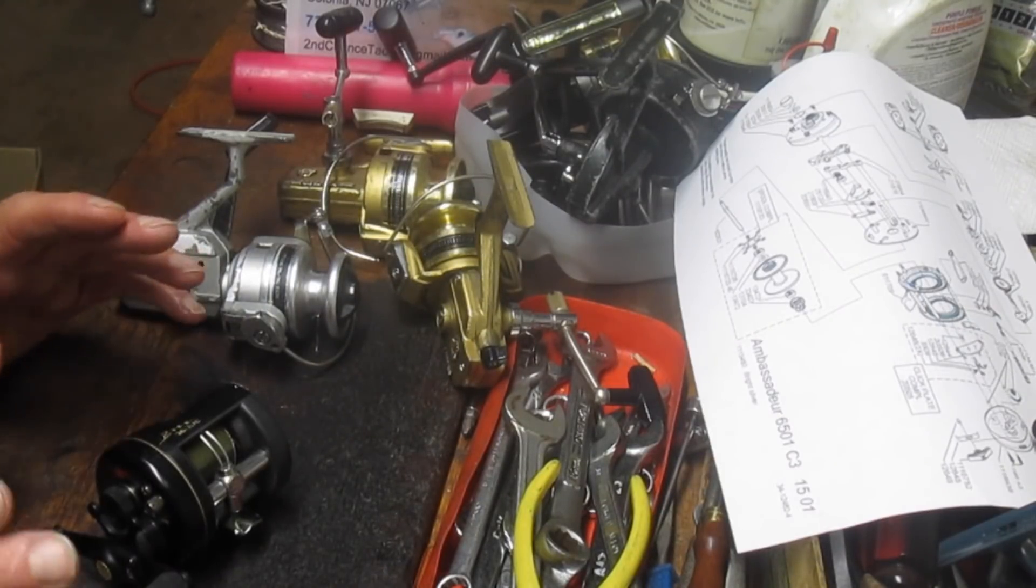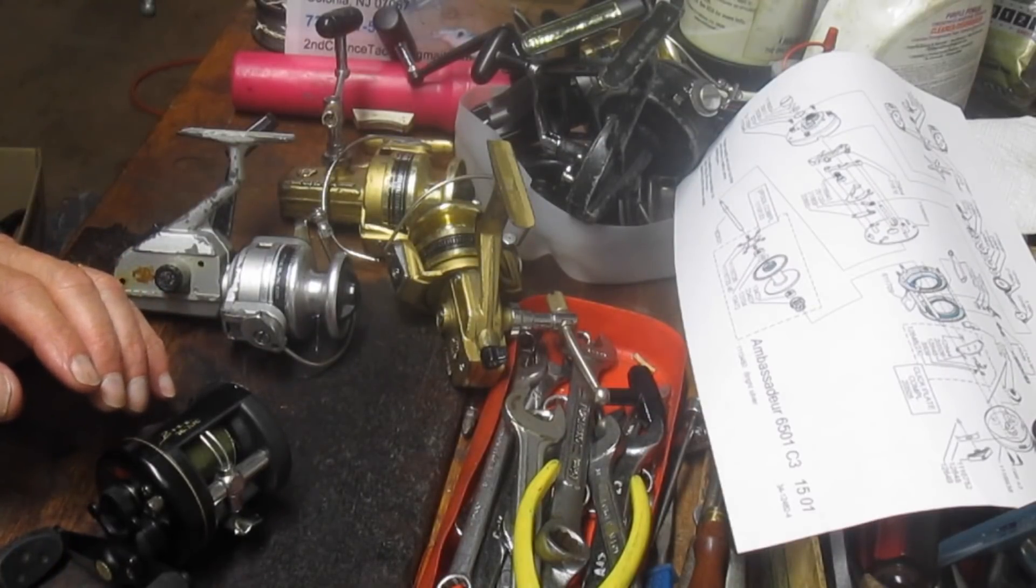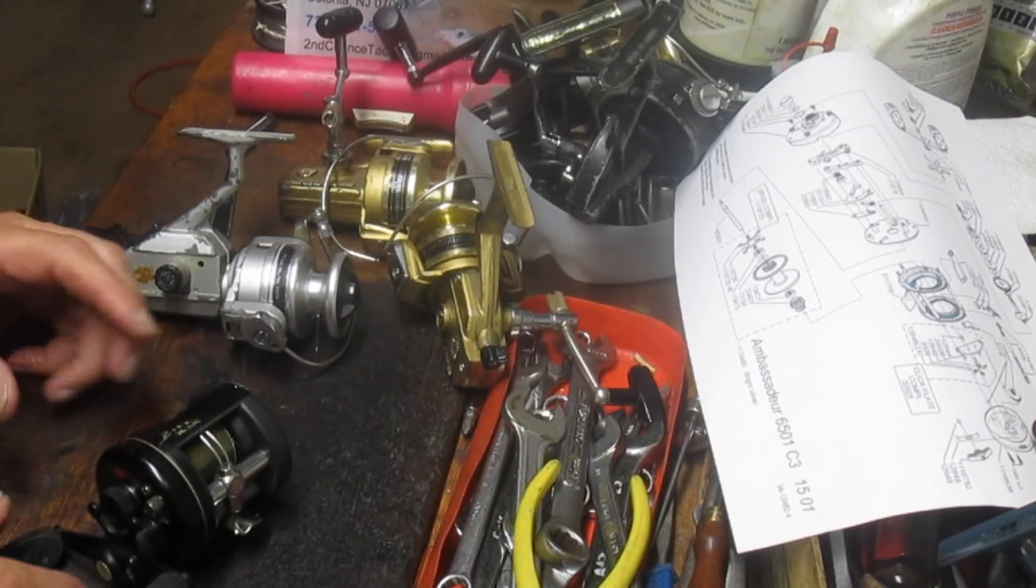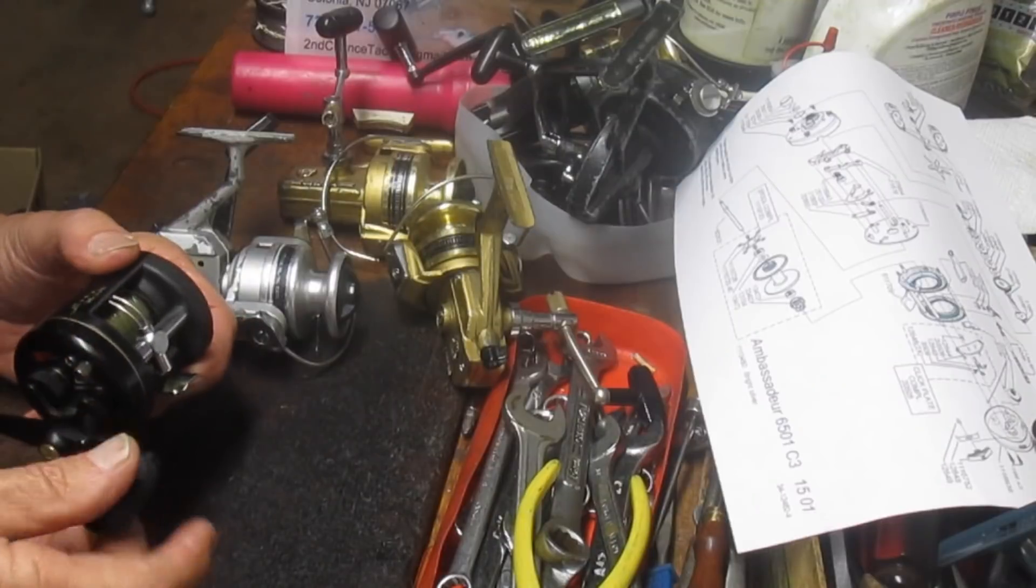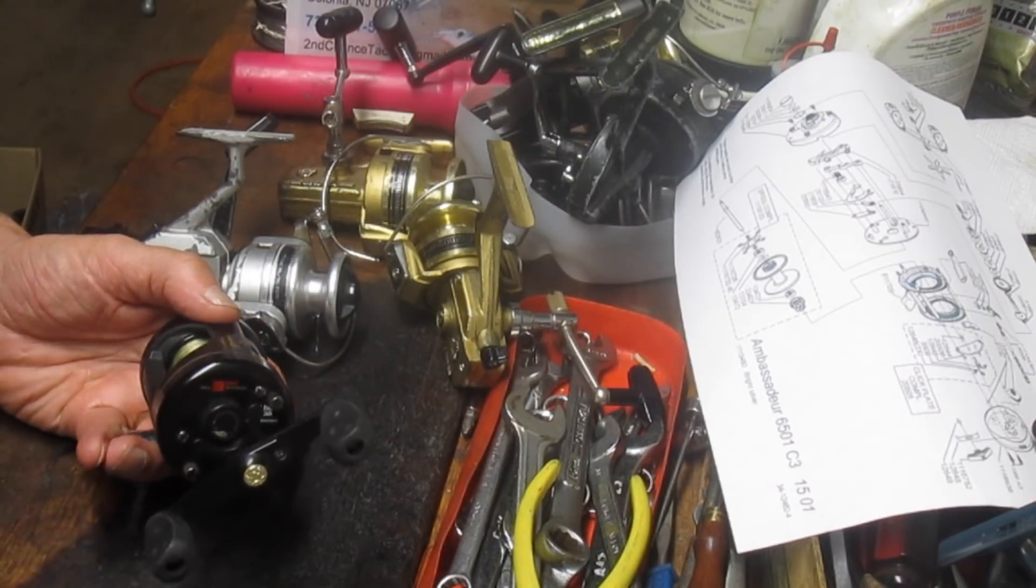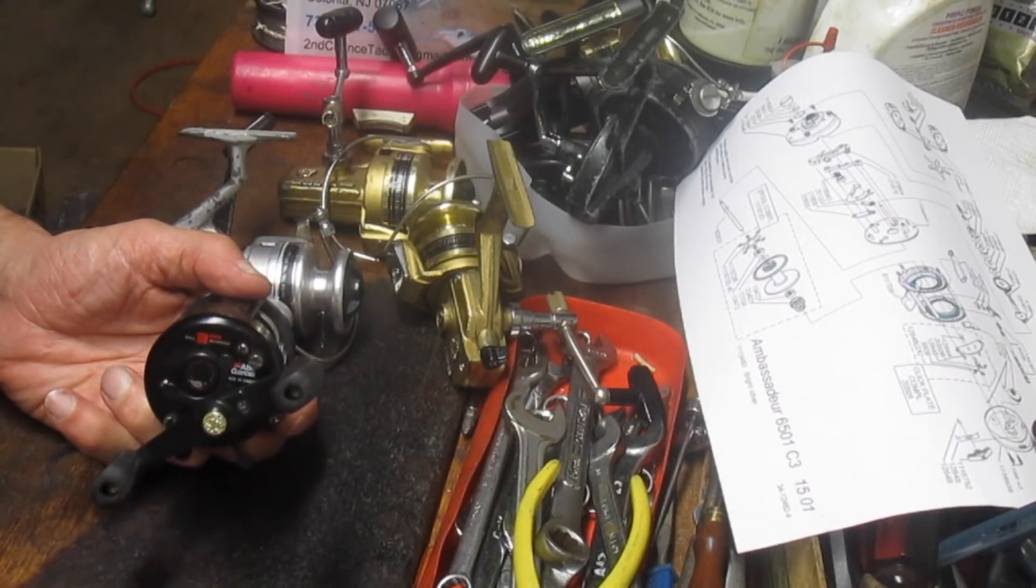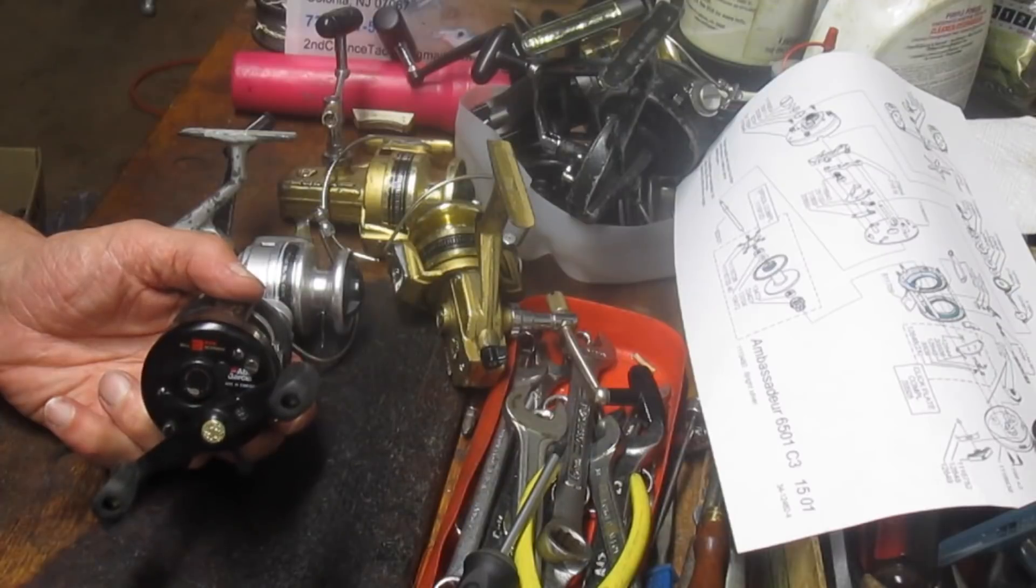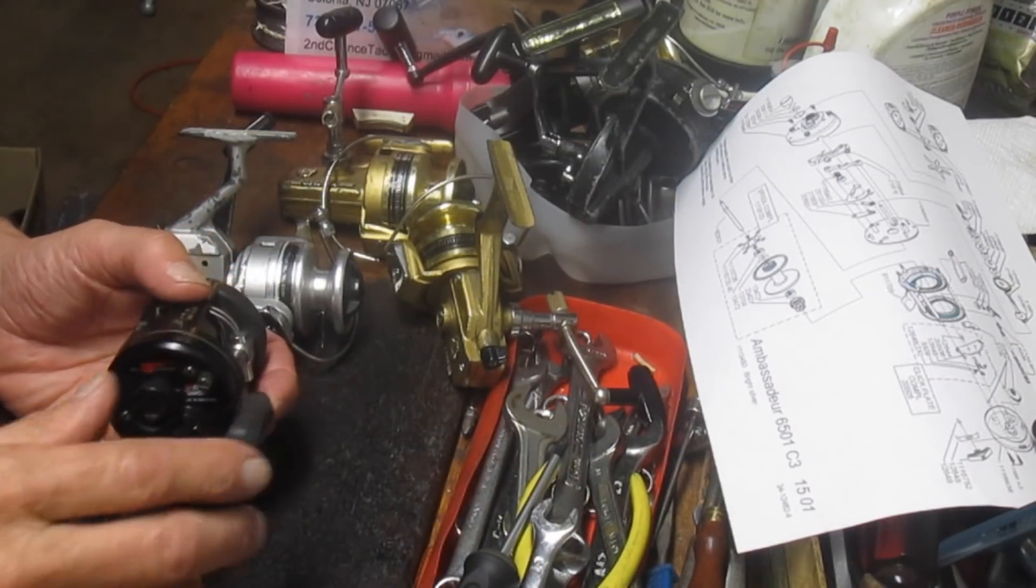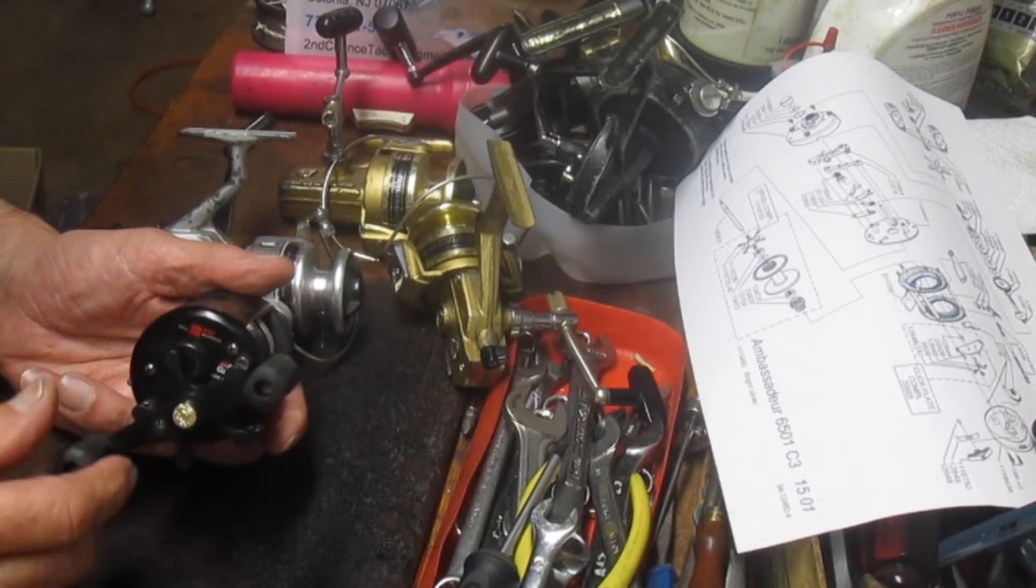First to start with, none of these reels cost more than $15. You want to make sure that you have a price range as you're out there working with fishing reels. Secondly, none of them has any major problems, which is also important. You want to make sure that they are repairable, that parts are available to repair them, and that they're not missing any pieces or parts.